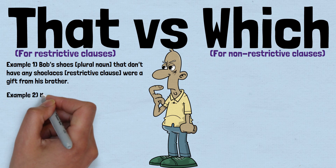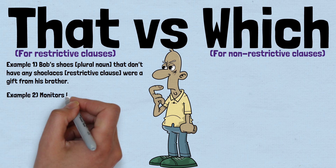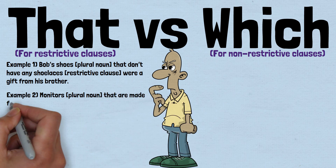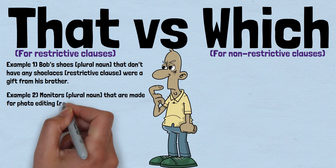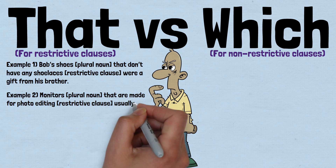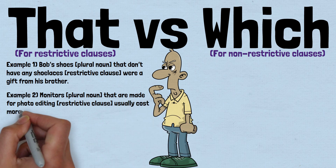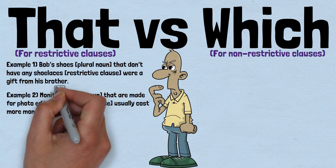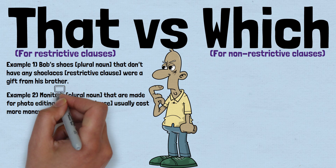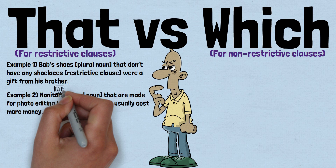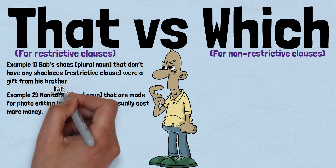Example 2: 'Monitors that are made for photo editing usually cost more money.' In this example, we understand that not all monitors are made for photo editing, so we use the word 'that' to communicate the information identifying this smaller subset of monitors as the focus of our discussion.